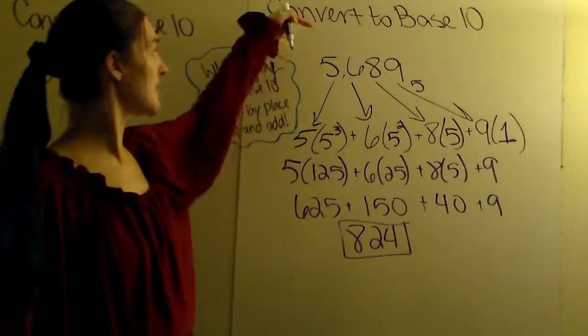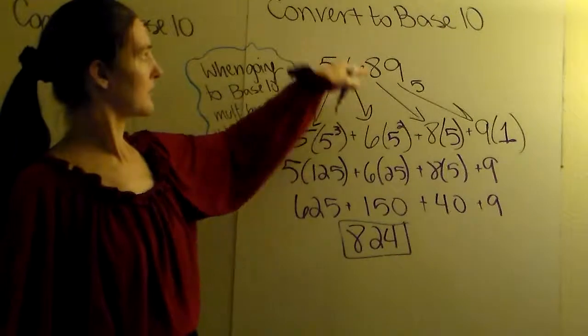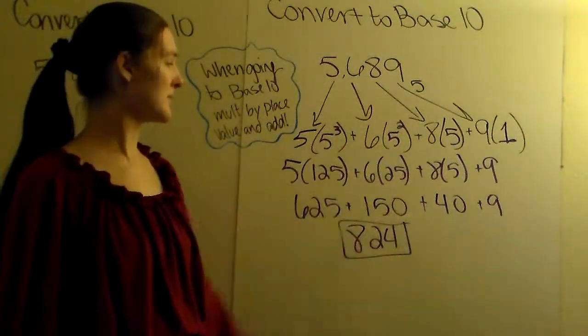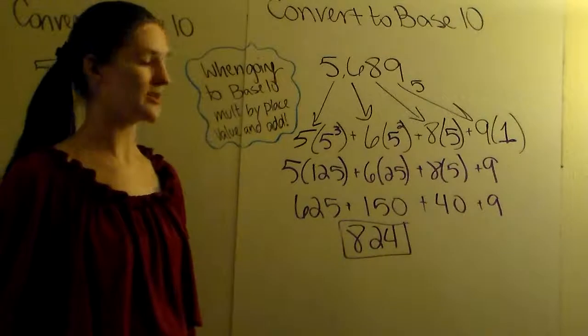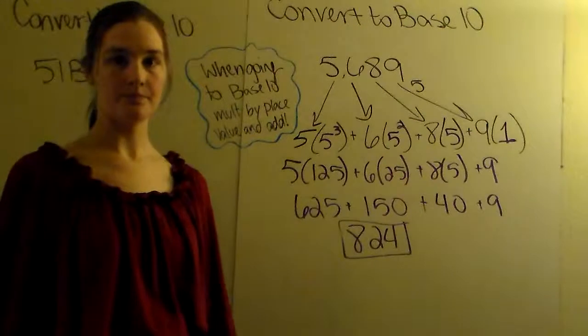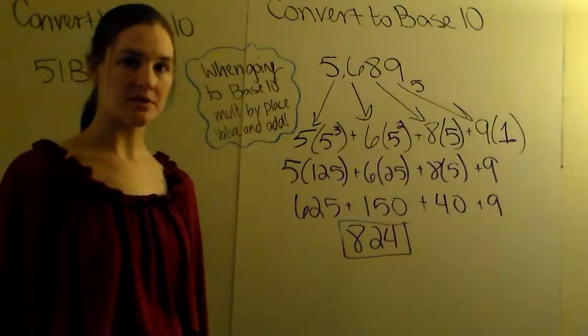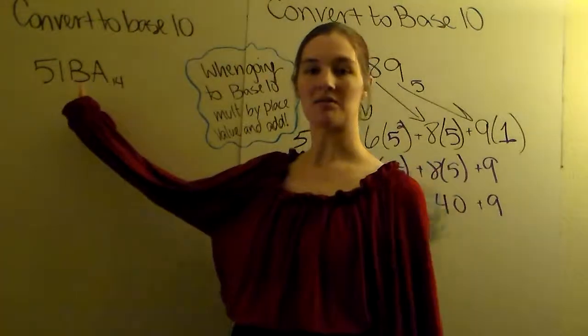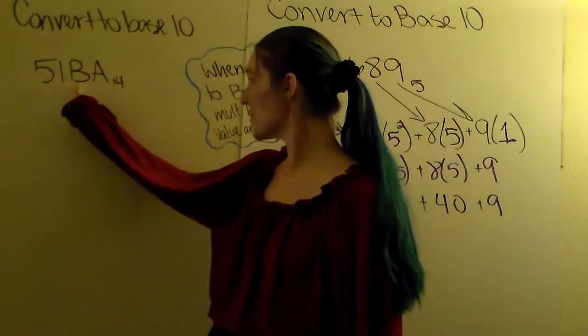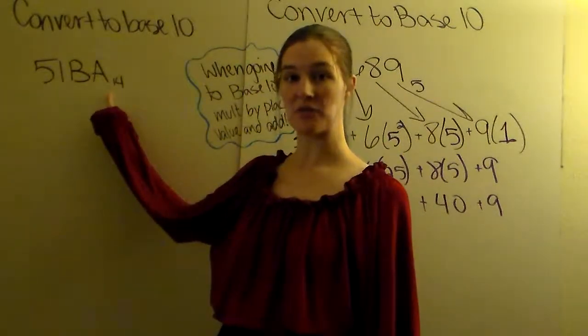So going to base 10, you're going to multiply by place values and add them all together. So this is base 5 to base 10. But sometimes, sometimes you have letters in your numbers.